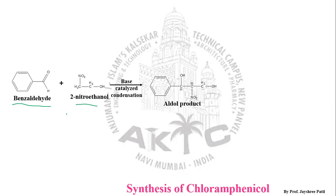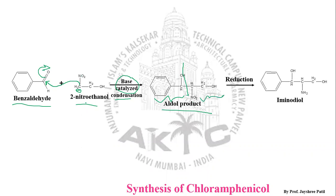Benzaldehyde and 2-nitroethanol undergo base-catalyzed condensation. In the presence of base, the CH2 becomes CH⁻ and attacks the carbonyl carbon. After this attack, we get the aldol product. The first part of the structure comes from benzaldehyde and the remaining part comes from 2-nitroethanol.